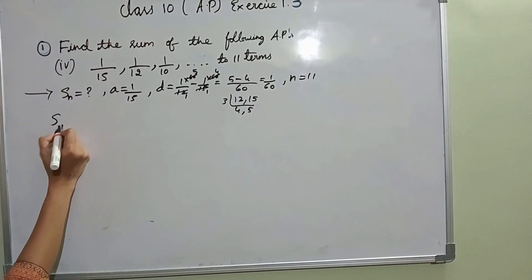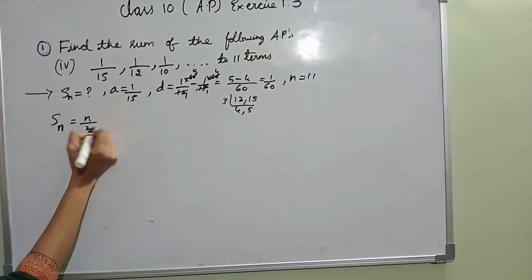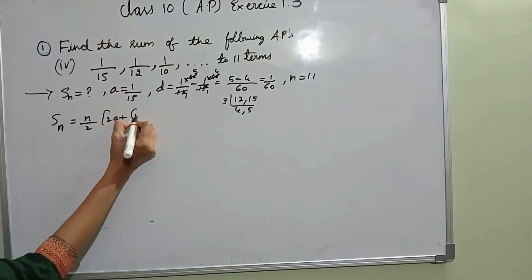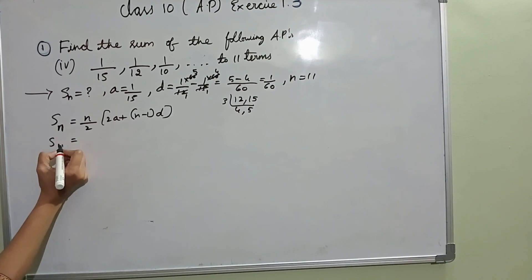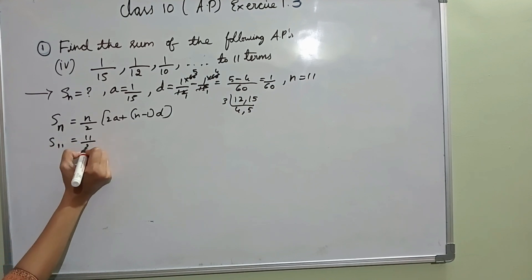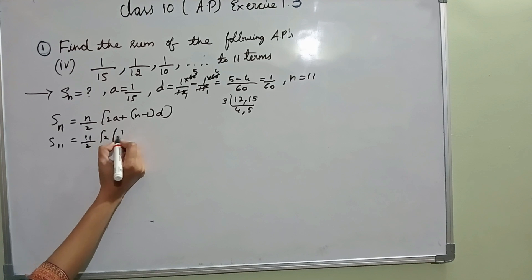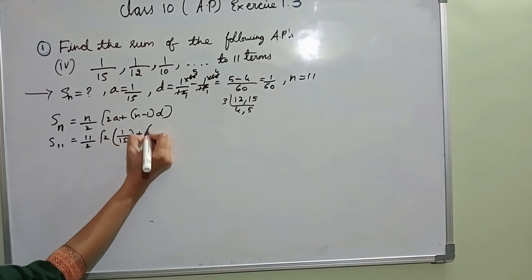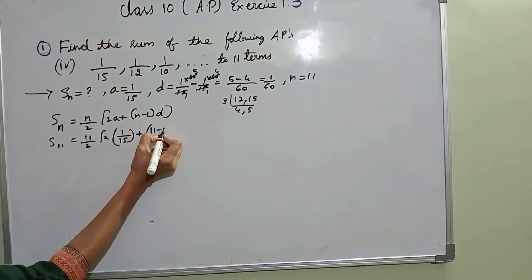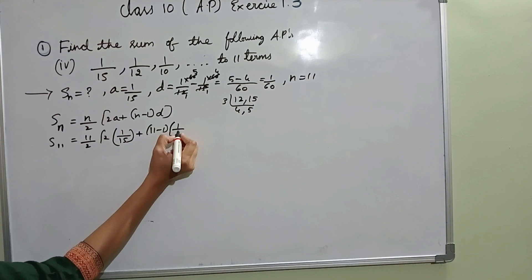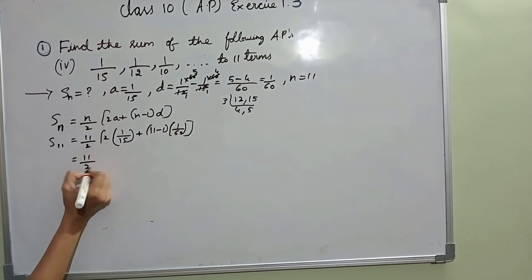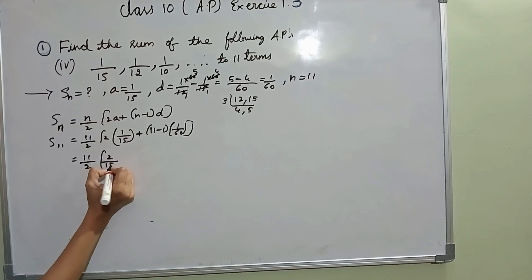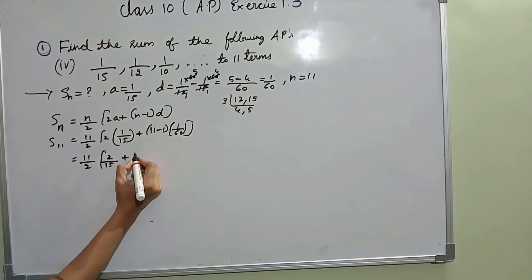First we write the SN formula: SN equal to N by 2 into 2A plus N minus 1 into D. Since N is 11: 11 by 2 into 2 times 1 by 15 plus 11 minus 1 into 1 by 60. This gives 2 by 15 plus 10 by 60.